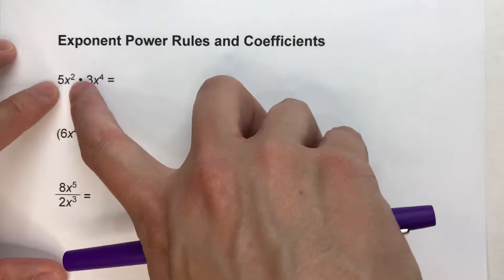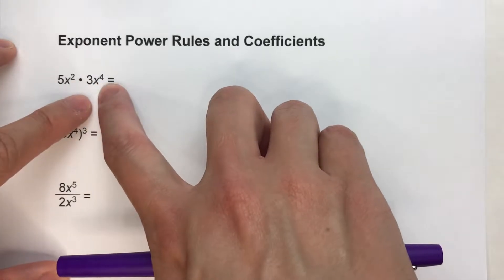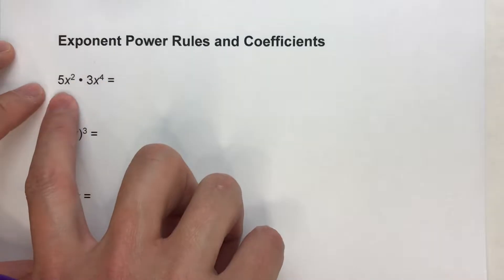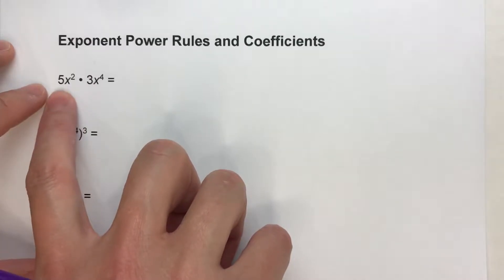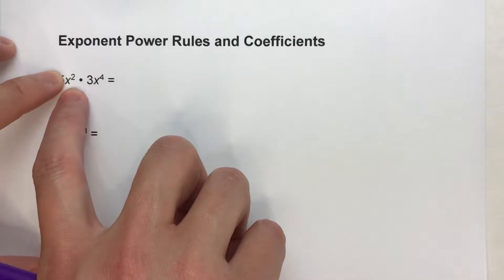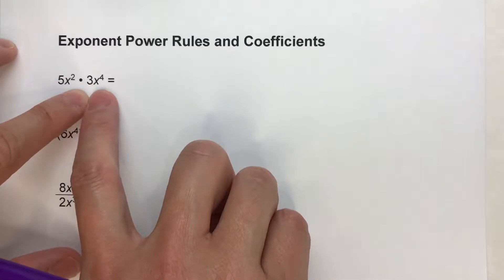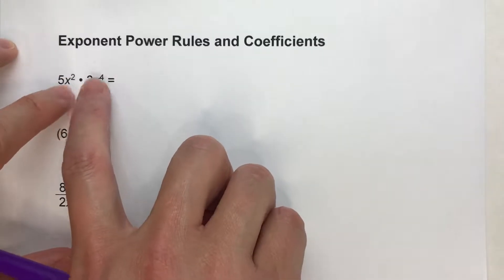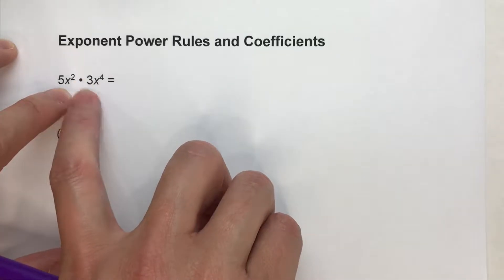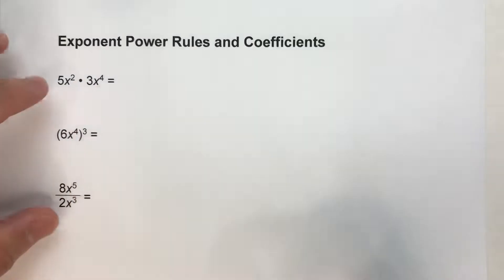For example, 5x squared times 3x to the fourth power. The 5 in front of the x squared is a coefficient because x squared is being multiplied by 5. And similarly, over here, x to the fourth power, 3 is the coefficient because it's being multiplied by x to the fourth power.